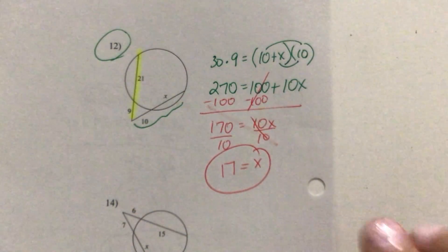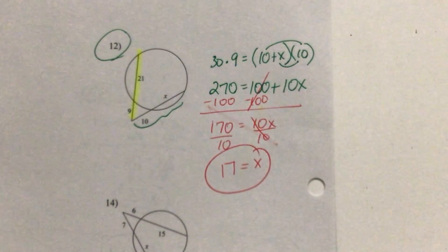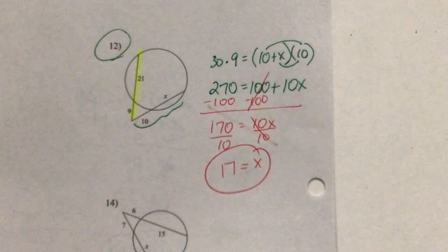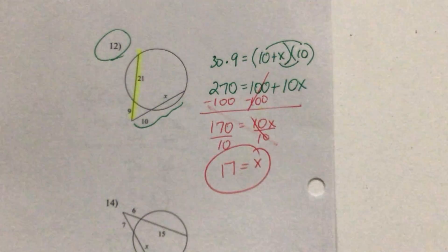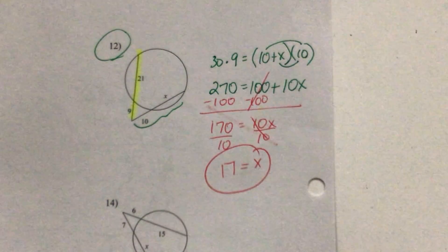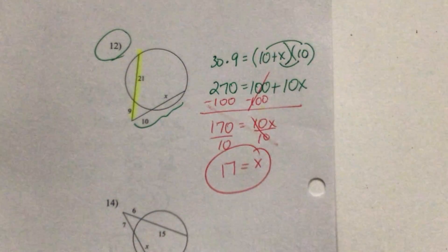There are one of three rules to use today: chord-chord, tangent-secant, or secant-secant. Just look at the picture to figure out which one applies. Your assignment for today is to finish the worksheet.